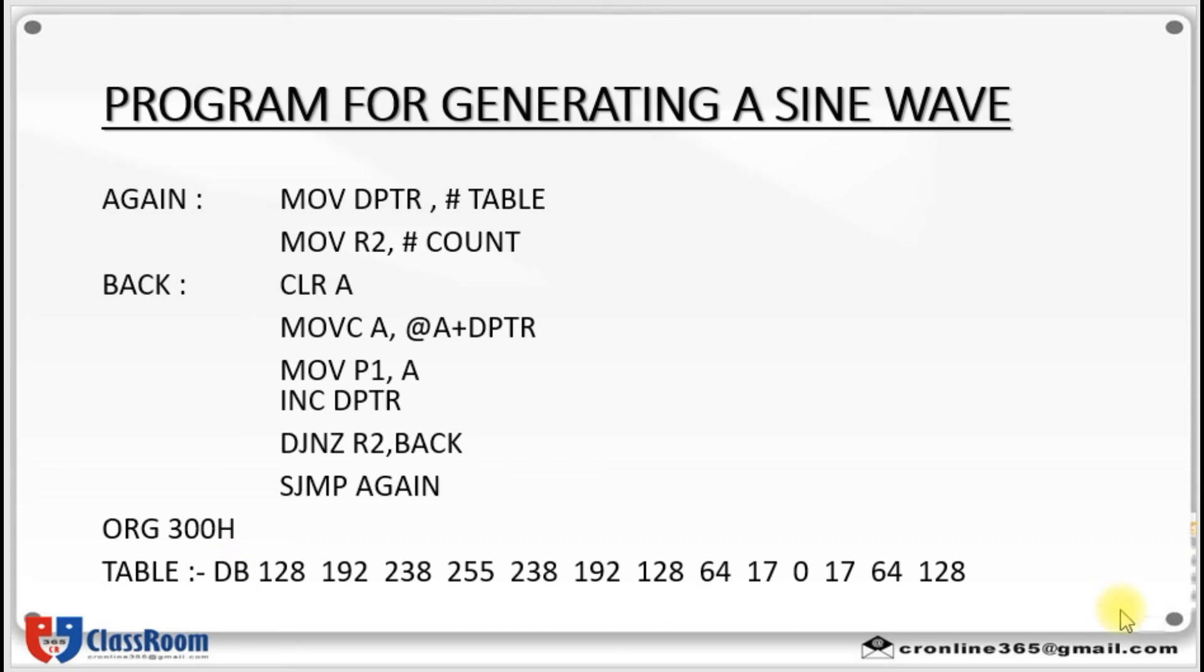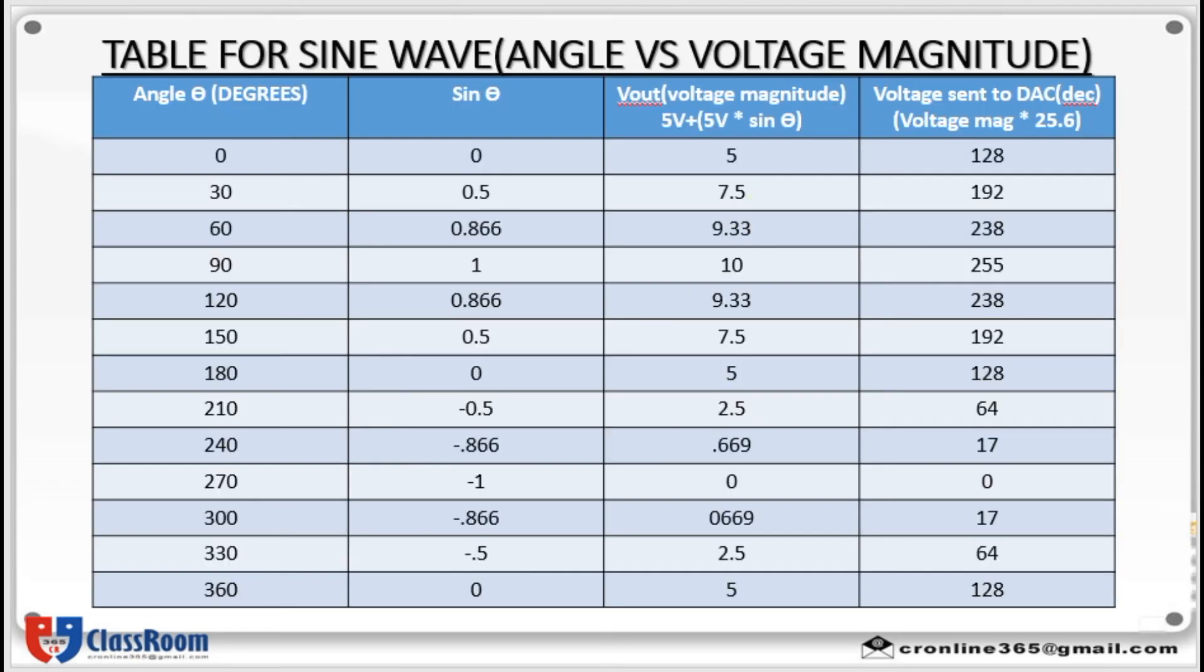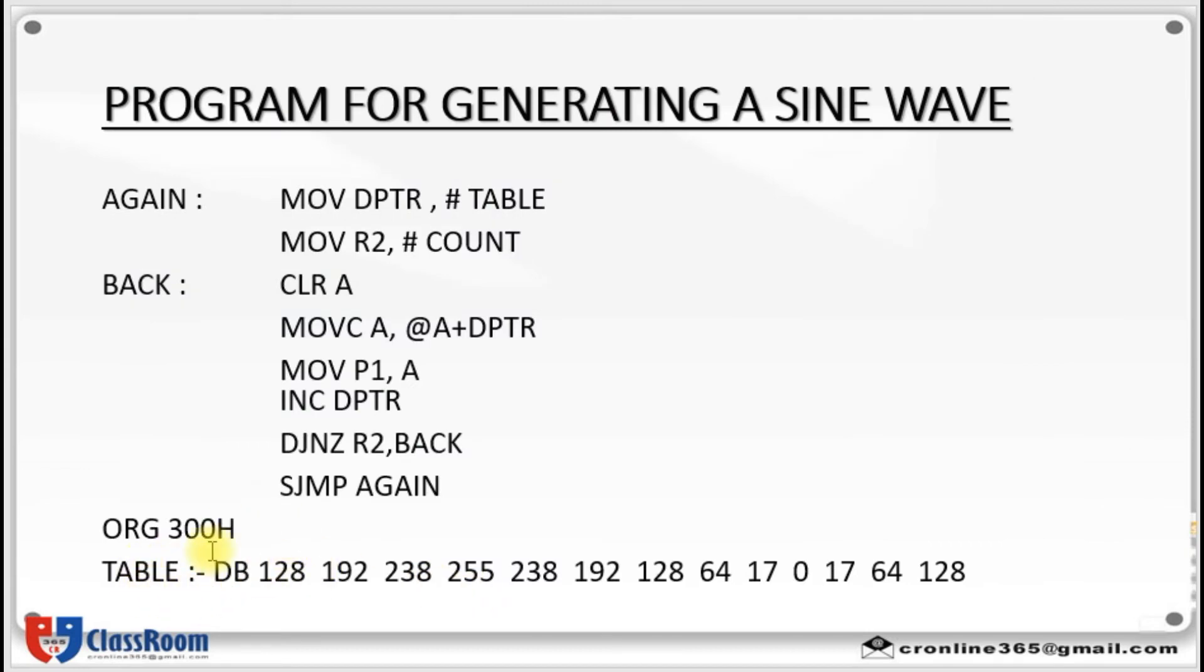So first we have initialized these values in the table. Then we have written a program based on that. Move dptr comma hash table. Table is initialized from 300h onwards. So 300h will be having this value 128, and these values 128, 192 up to 198 values. These values we have initialized as a table using define byte instruction and have created this table from the memory location 300h. Then by using this instruction move dptr comma hash table, that is dptr will be having the value 300. Data pointer will be pointing to the location 300h.